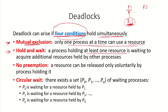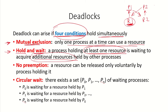The second condition is hold and wait: a process is holding at least one resource and is waiting to acquire additional resources held by other processes. As in the semaphore example, p1 is holding r1 and waiting for r2, which is held by p2, while p2 is waiting for r1. Each process is holding at least one resource and waiting for another resource held by some other process.